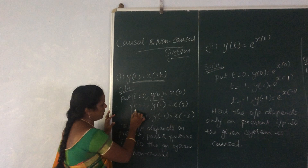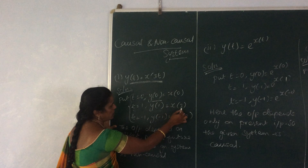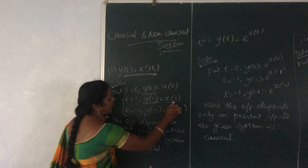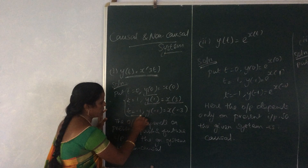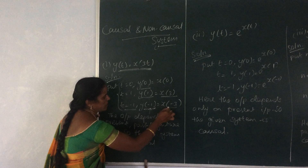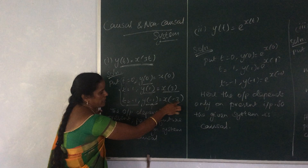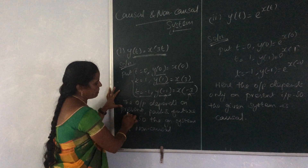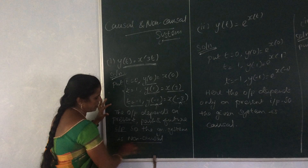When t = 1, y(1) = x(3×1) = x(3). So here the output at this instant depends upon x(3), which is the future input. When t = -1, y(-1) = x(-3), so the output depends upon x(-3), which is the past input. So the output for this system depends upon the present, past, and future input. Since the output depends upon the future input, the given system is a non-causal system.